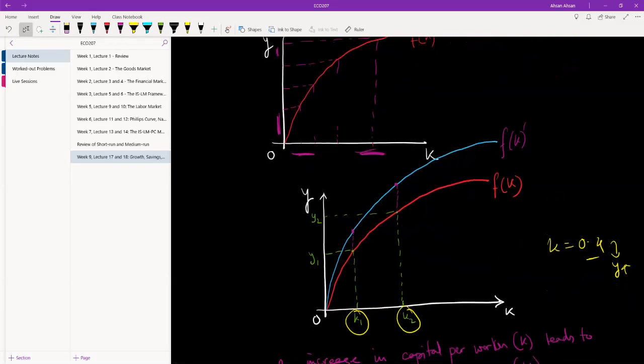This is an example of technological progress, and of course this has led to growth. So from y1 we've gone up to y3, from y2 we've gone up to this level, whatever this is, let's call it y4.